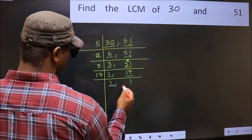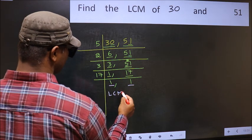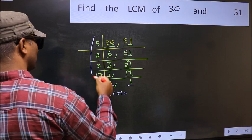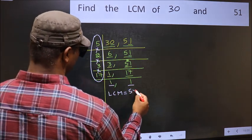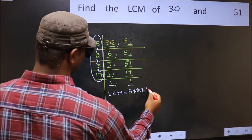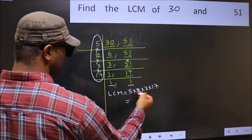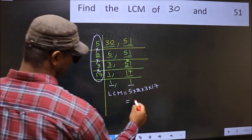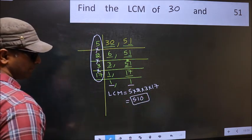We got 1 in both places. So our LCM is the product of these numbers: 5 times 2 times 3 times 17. When we multiply these numbers, we get 510 as our LCM.